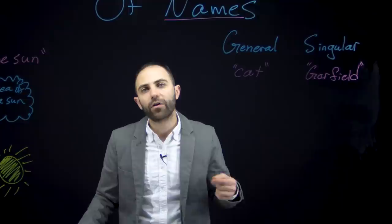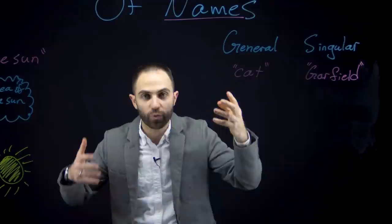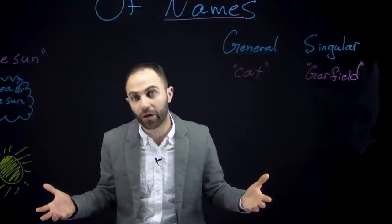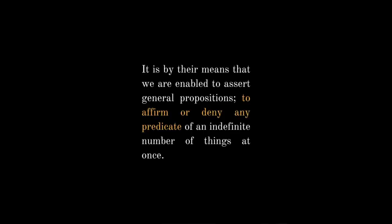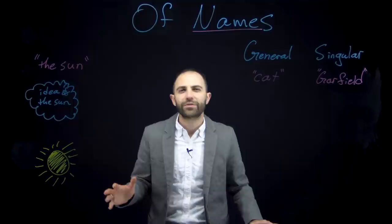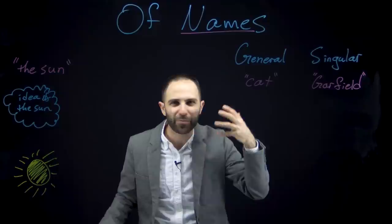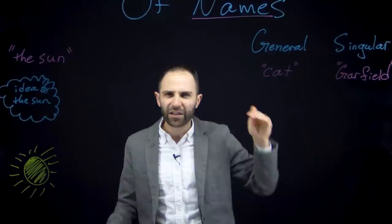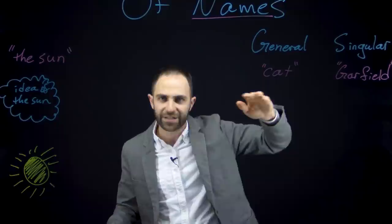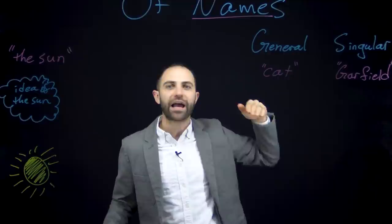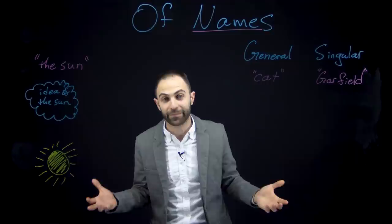Mill also explains why we have general names — why they're good to have in a language. It is by their means that we are enabled to assert general propositions, to affirm or deny any predicate of an indefinite number of things at once. Think of the sentence 'every cat is a self-centered narcissist.' That's a general claim about all cats. Mill's point is that only with general names can we say this. Otherwise, to make this claim about all cats, we'd have to construct a long sentence naming every single cat individually — and we haven't even bothered naming every cat.